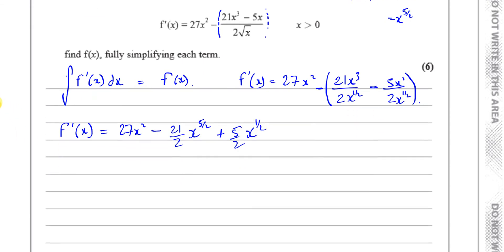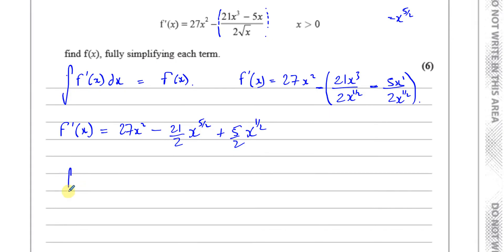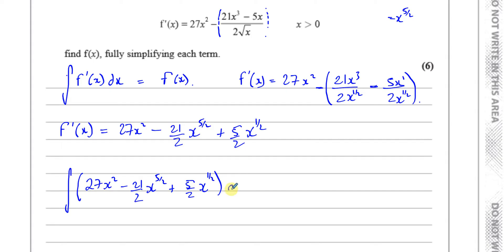Now it's ready to integrate. So I write the integral of [27x² − (21/2)x^(5/2) + (5/2)x^(1/2)] dx. Don't forget to put the dx, and make sure the whole expression is bracketed since everything is being integrated.